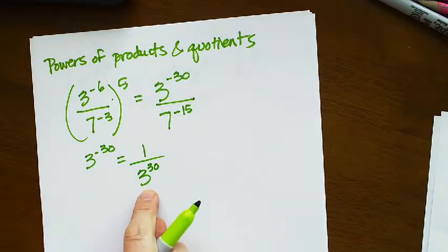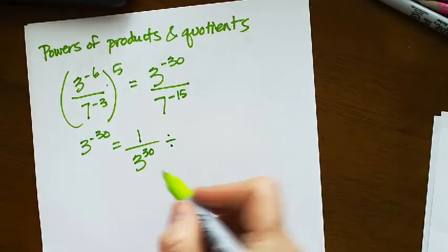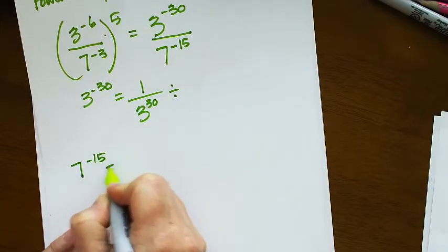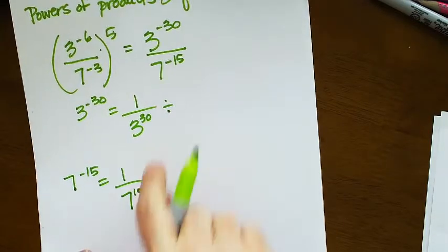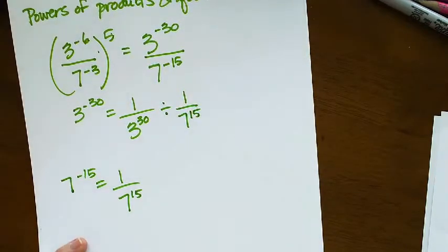So I have 1 over 3 to the 30th divided by, now I'm going to come over here and do 7 to the negative 15. That's 1 over 7 to the 15th. So I'm dividing by 1 over 7 to the 15.